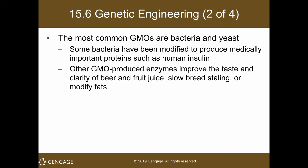The insulin produced comes from the human gene, so they are creating the human version of insulin. The only issue is whether the proteins are folded correctly, but that is another topic. GMOs also produce enzymes — not only insulin but also enzymes for industrial-scale production. These GMO-produced enzymes improve the taste and clarity of beer and fruit juice, slow bread staling, or modify fats.